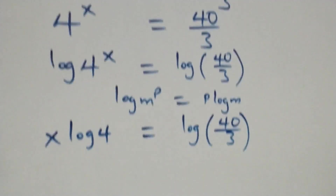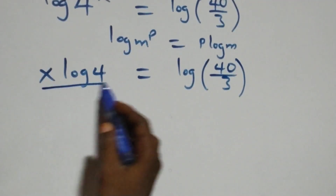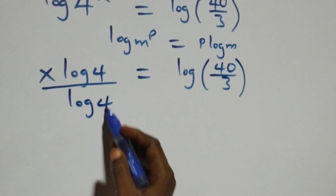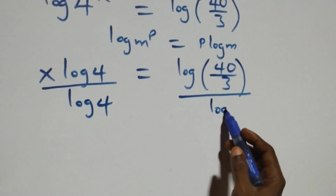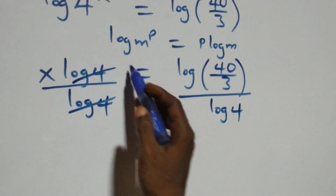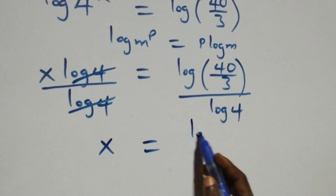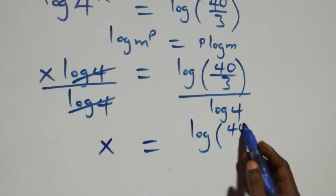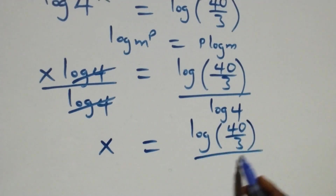The next step, we divide both sides by log 4. Log 4 cancels each other, and we have x left, which equals to log 40 over 3, divided by log 4.